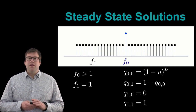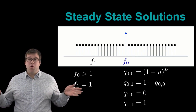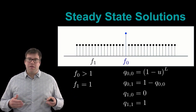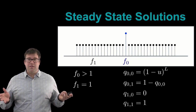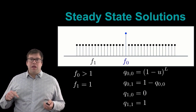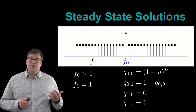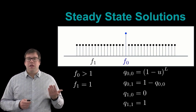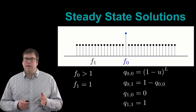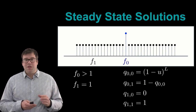We also consider the probability of back mutation from any f₁ sequence into f₀, which we set to zero. This accounts for the fact that there are a huge number of f₁ sequences on the hypercube, so the probability of a mutation that left f₀ finding its way back is very low — a standard simplifying assumption. Consequently, the probability of f₁ mutating into f₁ is one, under the same assumptions.